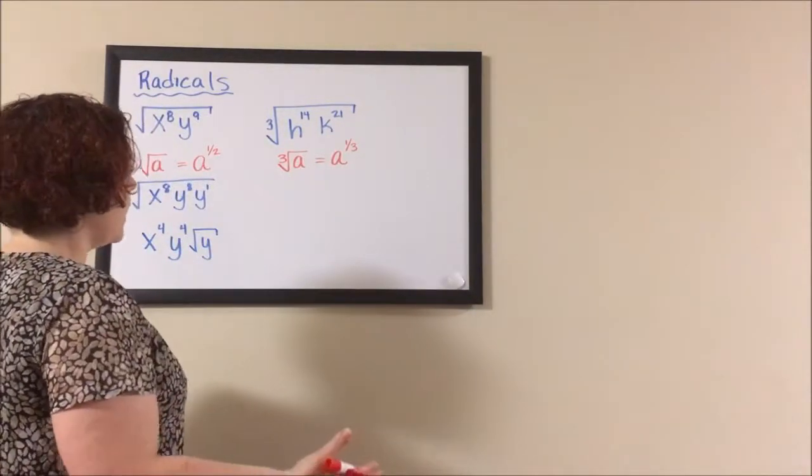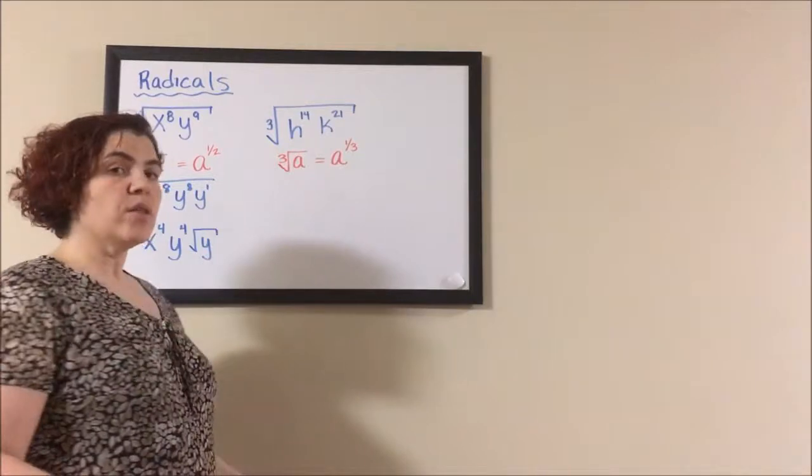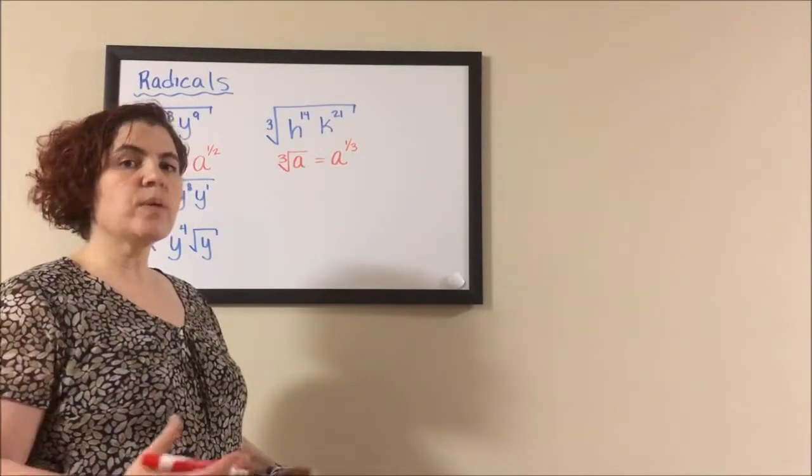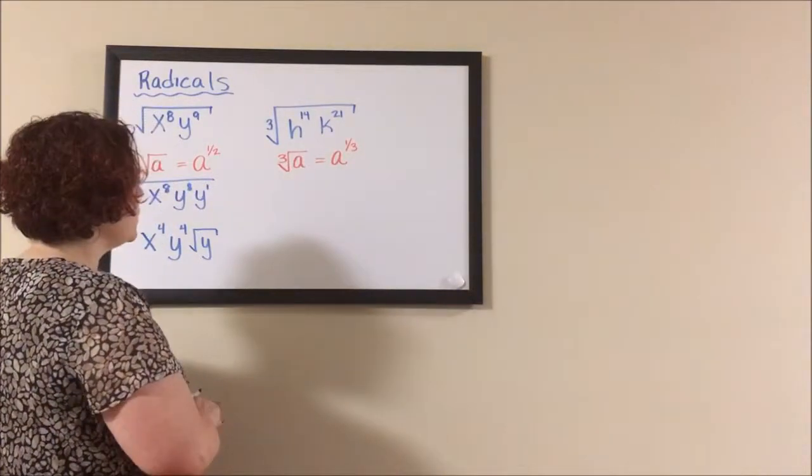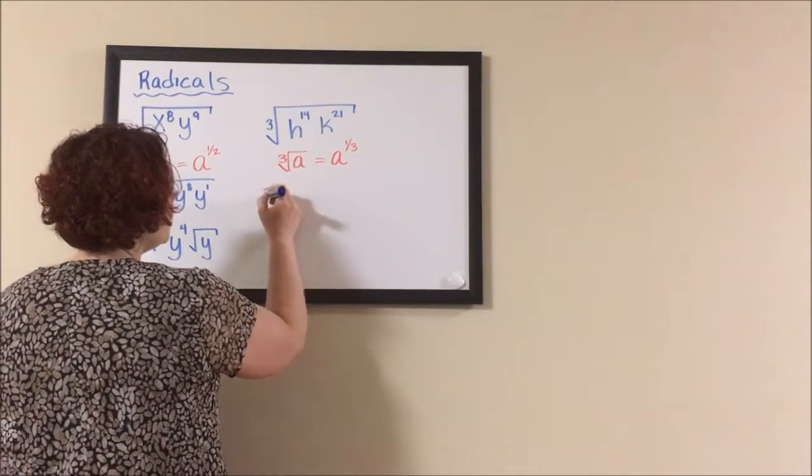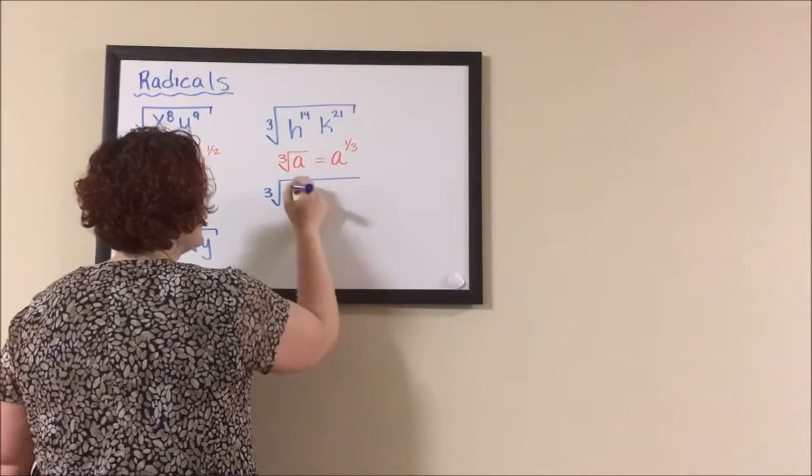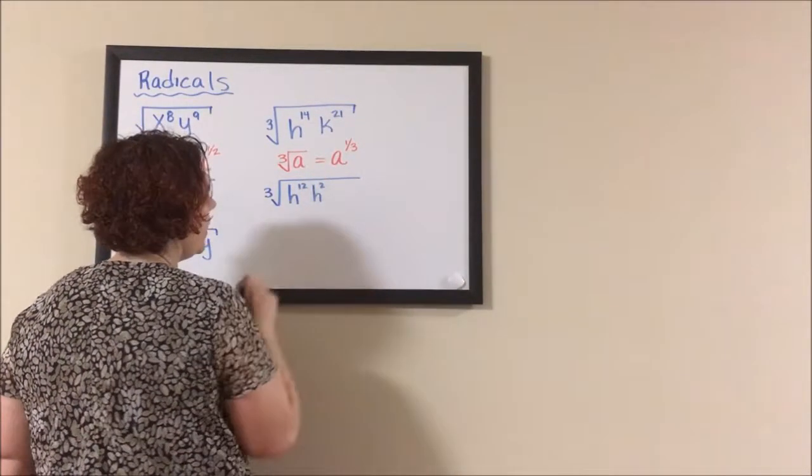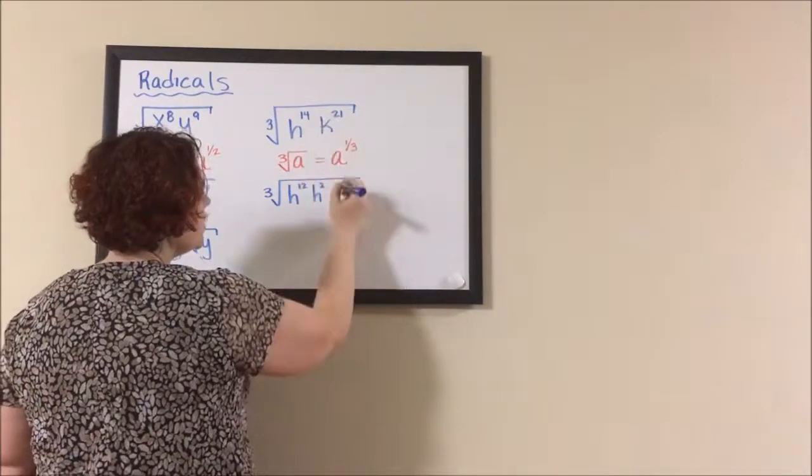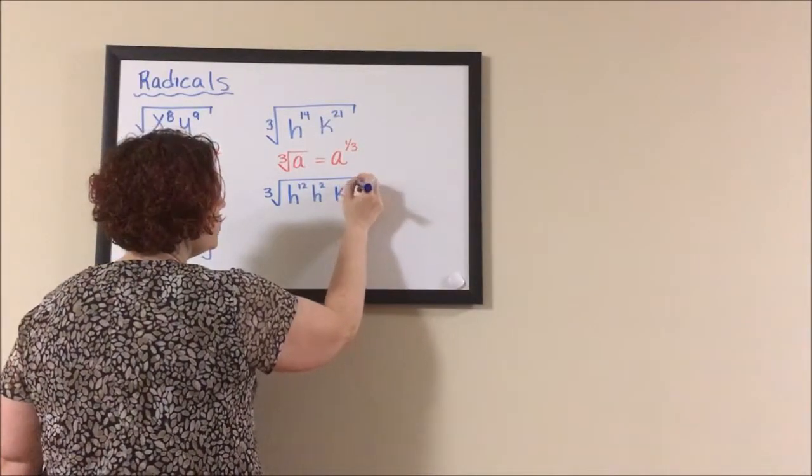Once again, we're kind of stymied by a 14. Three does not go into 14, so we need to deal with the remainder first. So three goes into 12, so we have the cube root of h to the 12. But to get down to 12, we had to subtract off two of them. And three does go into 21, so I'll just leave the 21 there.